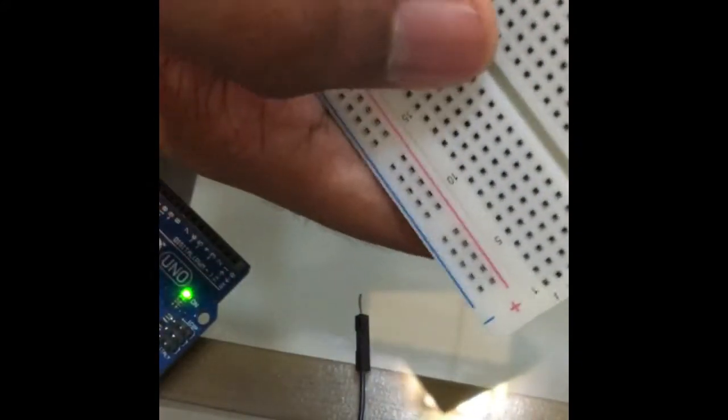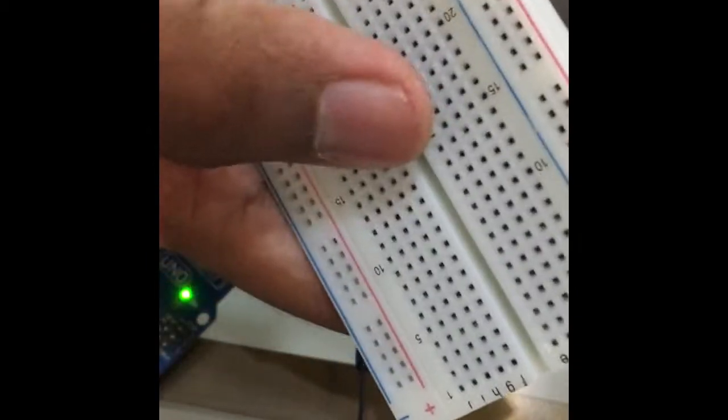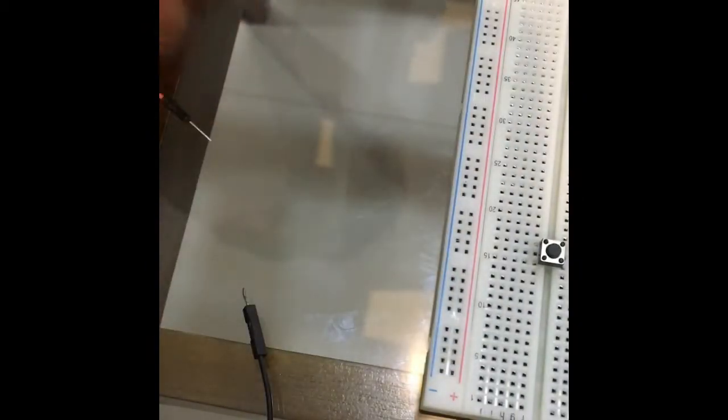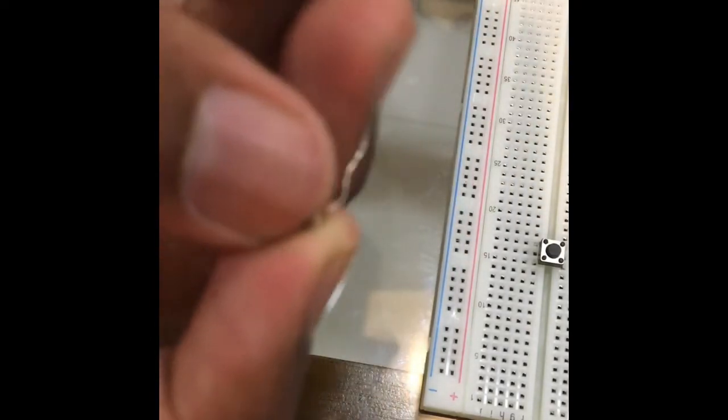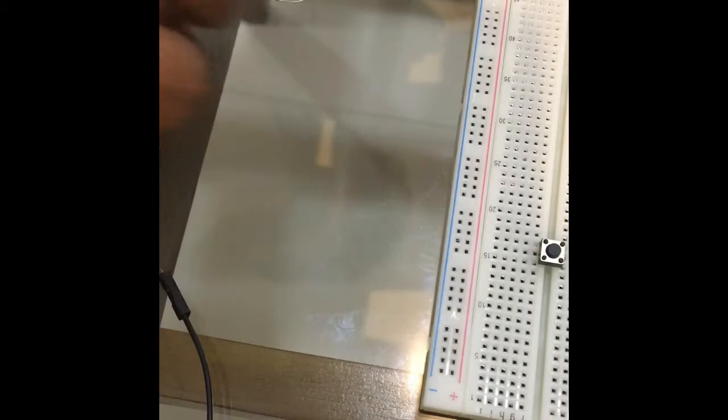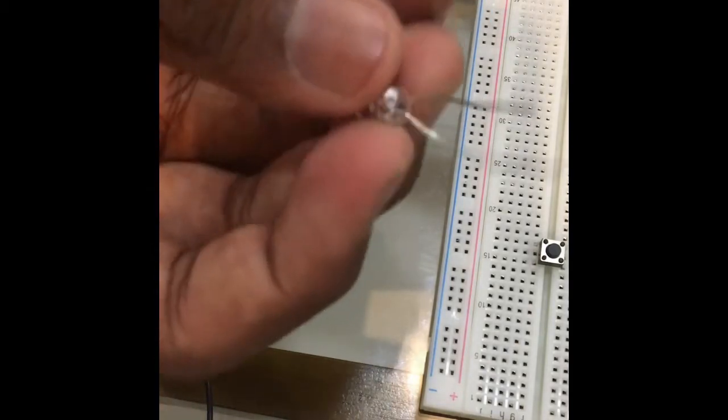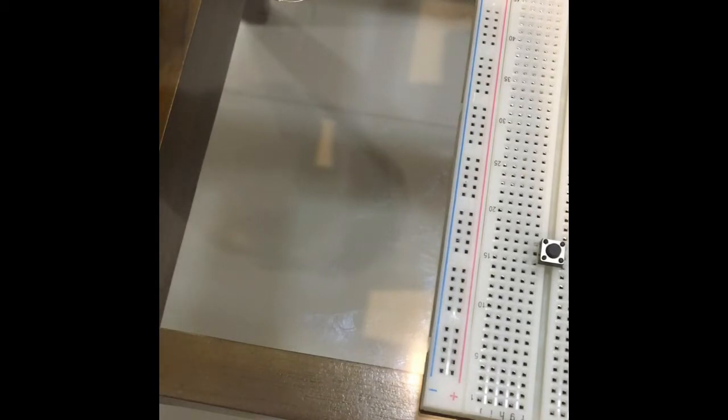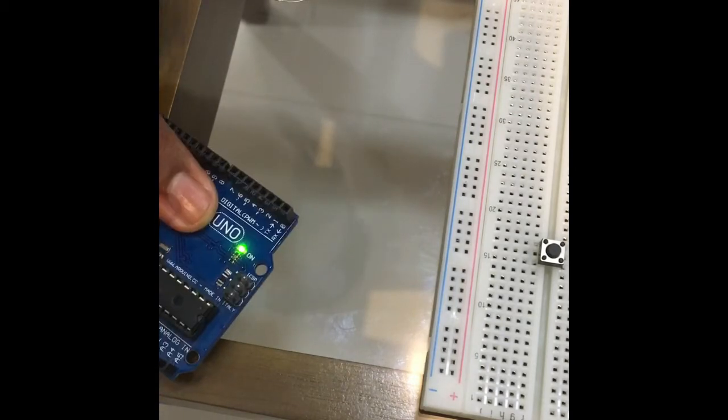It's a sensor because it senses the push we give. For this we need jumper wires, a resistor around 10k, an LED, and actually we need three jumpers and especially the push button.